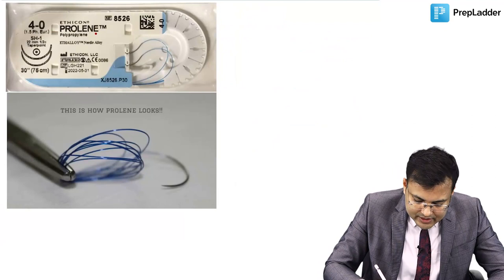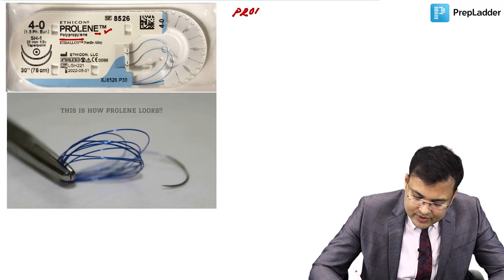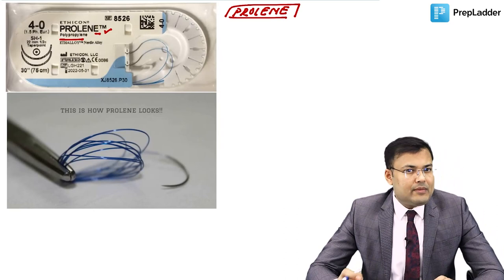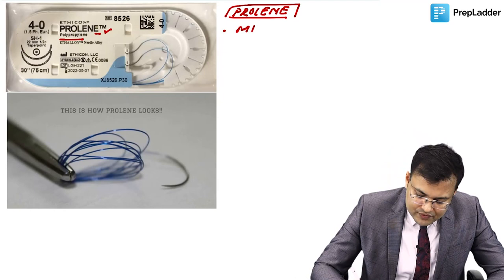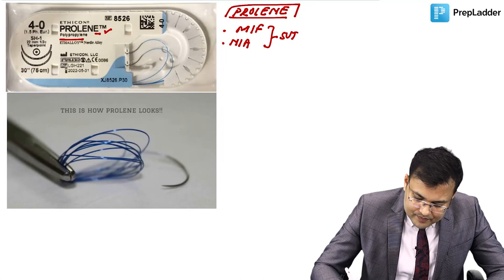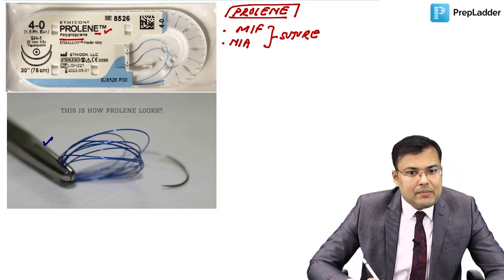Proline (polypropylene) is a monofilament non-absorbable suture. It is identifiable on the packet as 'proline' or 'polypropylene.' When using proline, a mosquito forceps is applied at one end because this suture has very strong memory — the tendency to return to its unpackaged state.